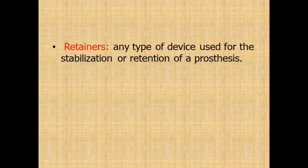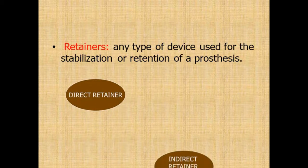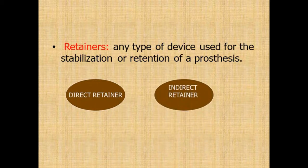Before getting into indirect retainer, let us see some basic ideas — what is a retainer and the classification of retainer. You can mention these in your answer sheet but there is no need for expanding. A retainer is any type of device that is used for stabilization or retention of a prosthesis, preventing its dislodgement. Retainers are divided into two: the direct retainer and the indirect retainer.